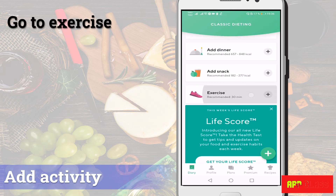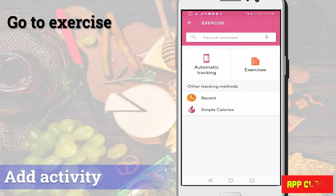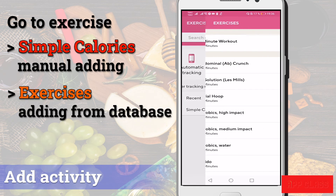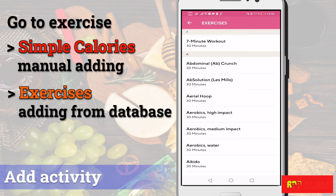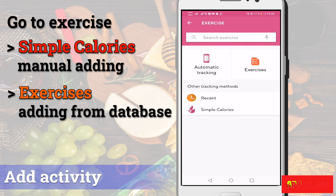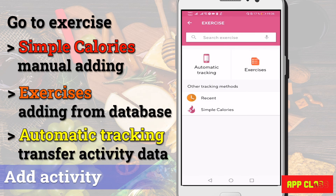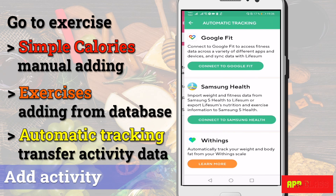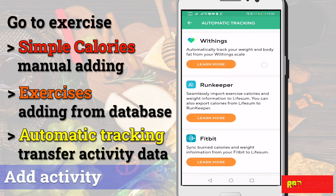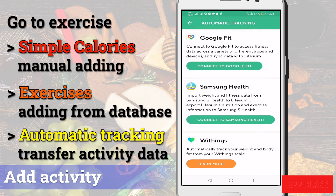Scroll down on the home page and go to Exercise. To manually add, go to Simple Calories. To add from the database, go to Exercise, find the activity from the list, and modify according to your preferences. For automatic calorie record transfer, go to the Automatic Tracking option and find your app or device. Note that only a limited number of apps and devices can be connected.